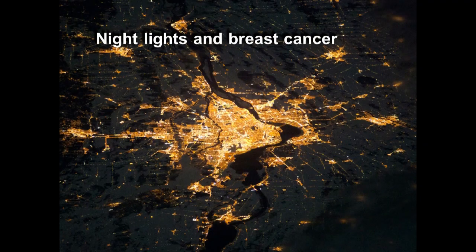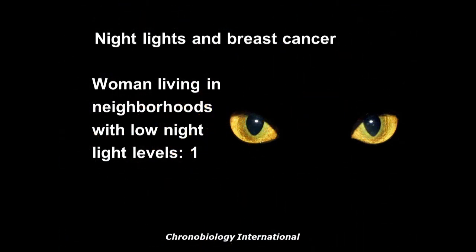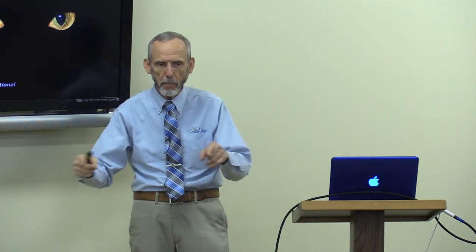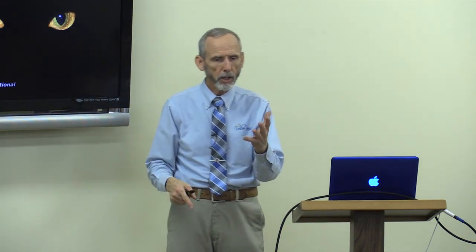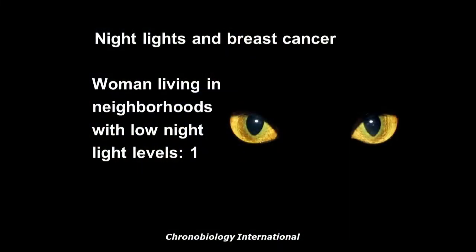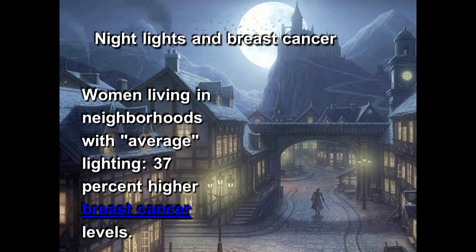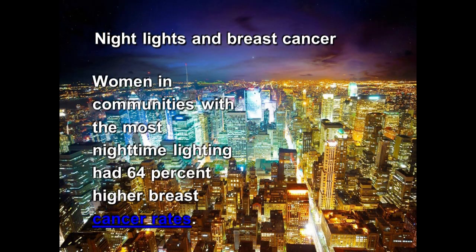How about night lights? A study done in Israel, published in Chronobiology International, took a satellite photo of a country at night and sent epidemiologists into those areas to see what the cancer rate differences were. Women living in dark areas had a relative risk of one for breast cancer. Those in lower-light areas had a risk 37 percent higher. Those who lived in bright areas had a 64 percent greater risk of developing breast cancer.